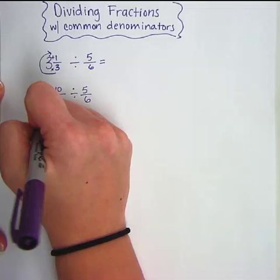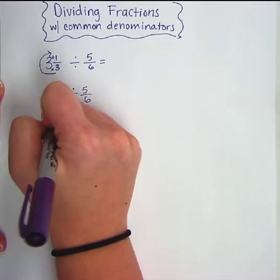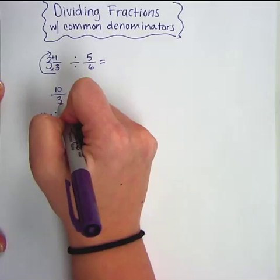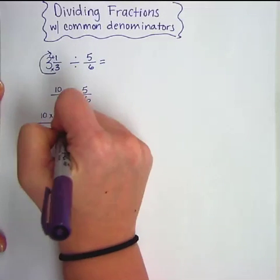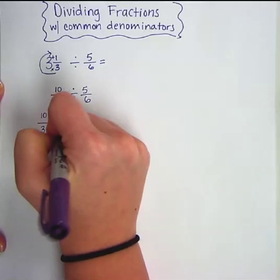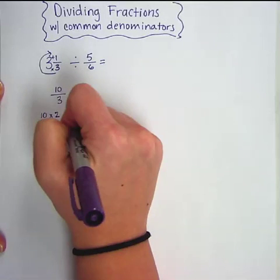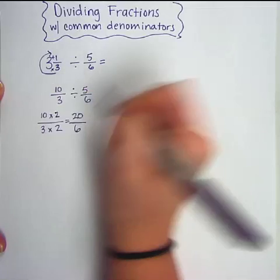So I'll think in my head... we'll do 3 times 2 and 10 times 2. So 10 times 2 and 3 times 2 which would give me 20 over 6.